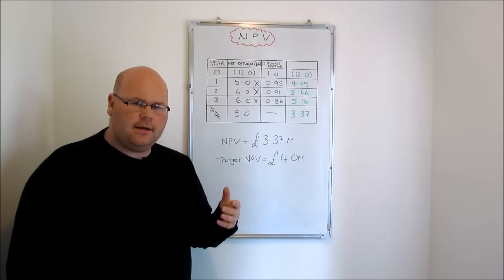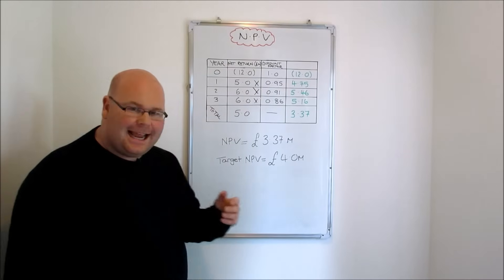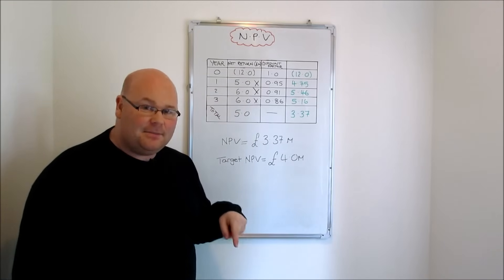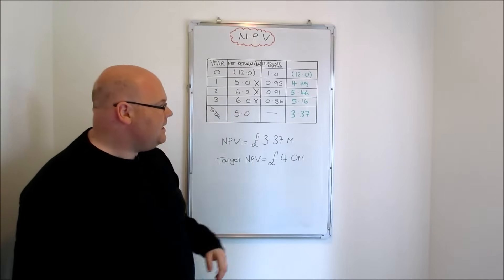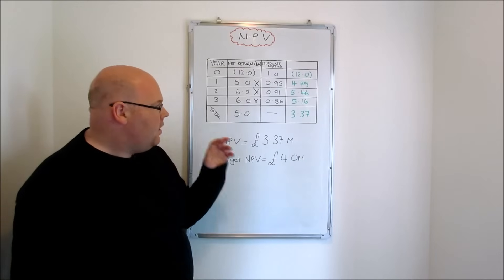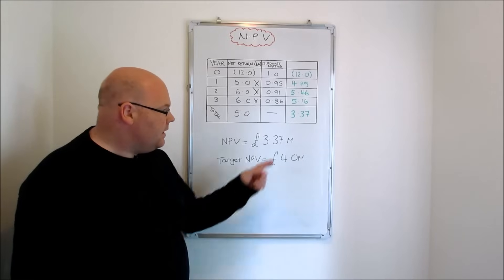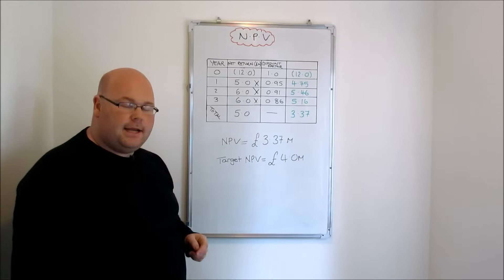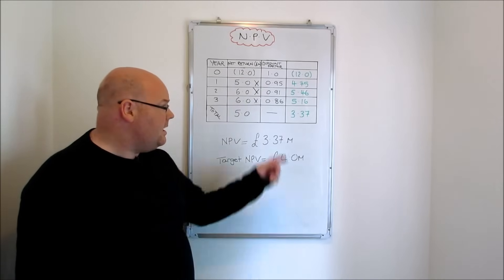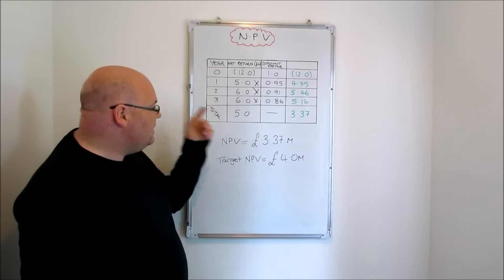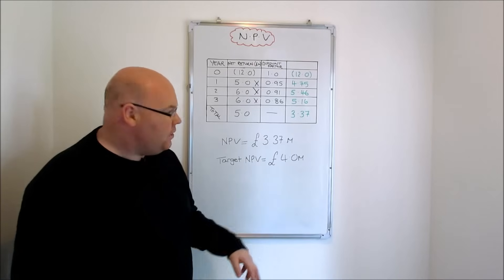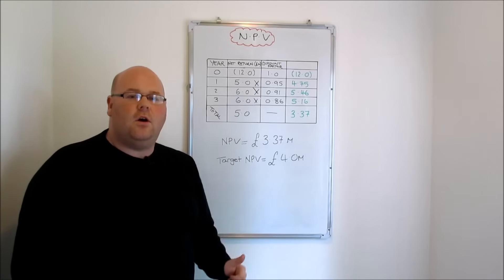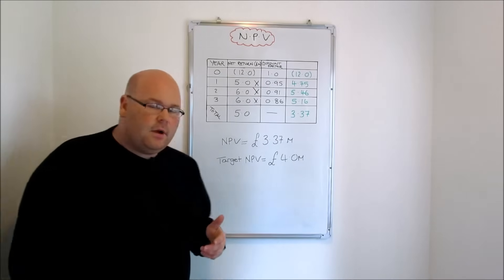But if we slow down and reflect — six million pounds in three years isn't the same as having it right now. When we apply the discount factors and calculate the NPV, a scheme that looked good on the face of it doesn't actually meet our criteria. We thought it was going to make us 5 million pounds — we thought we were in the winner's enclosure — but after discounting, we come up short with only 3.37 million pounds by today's value of money.